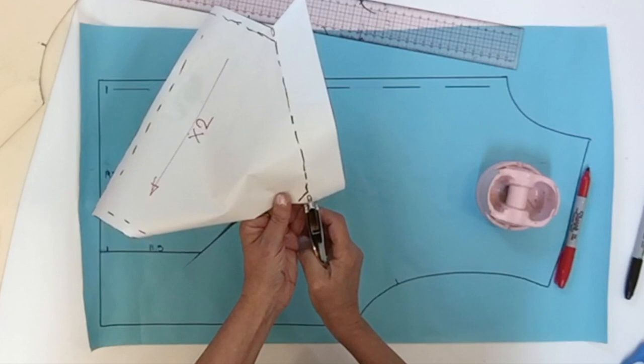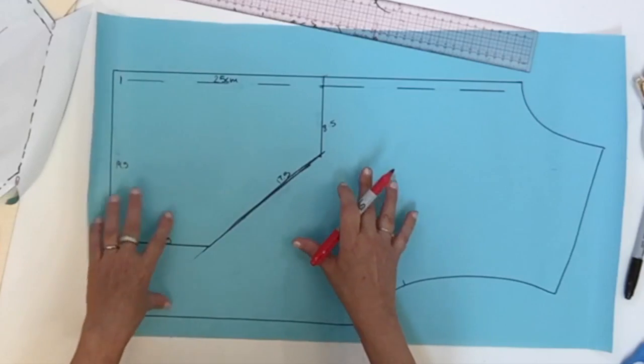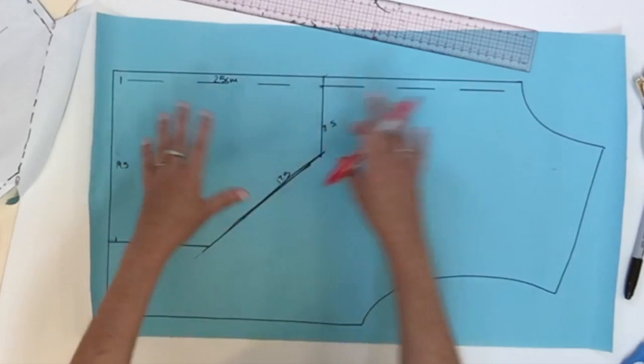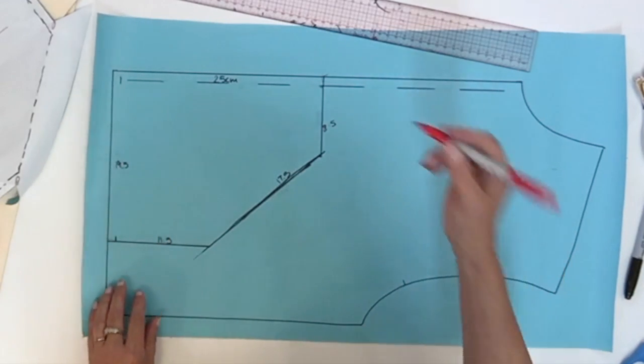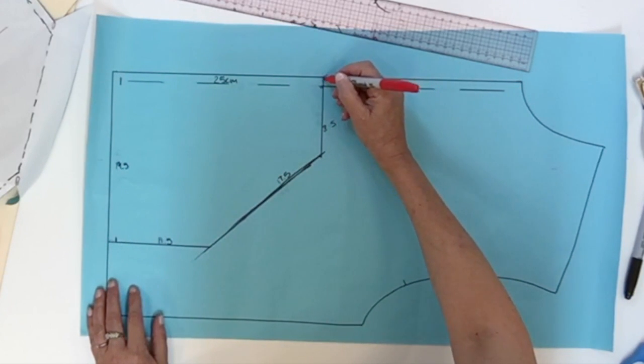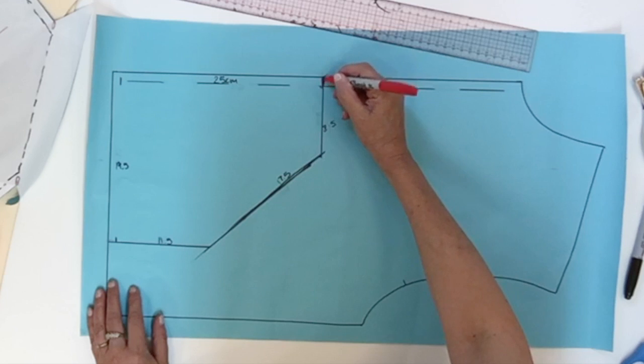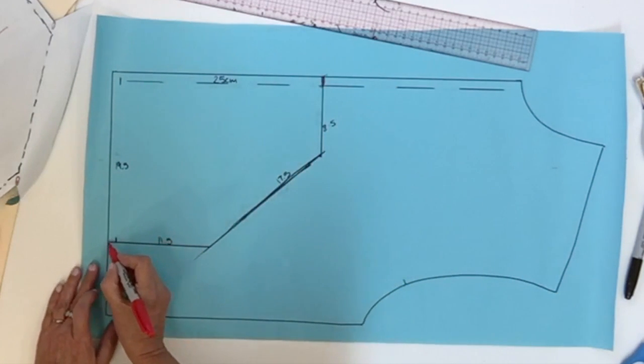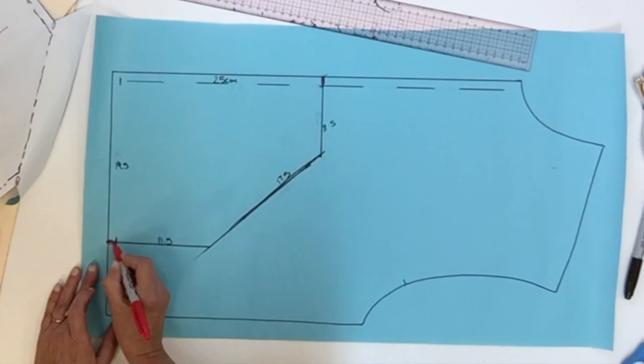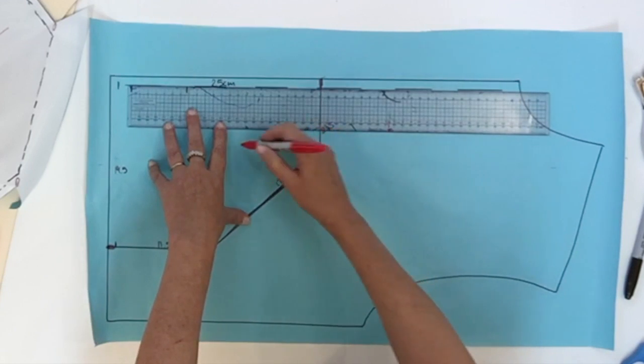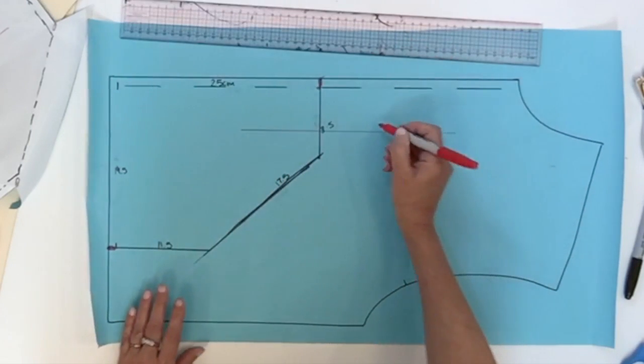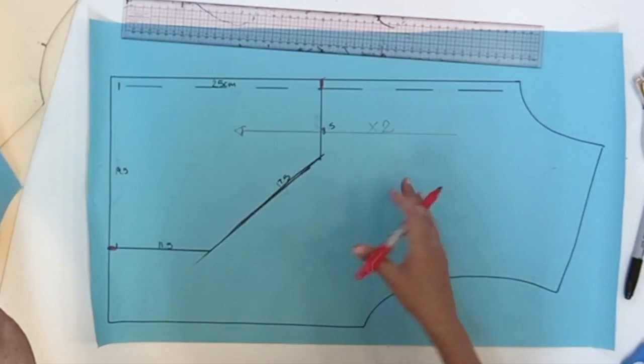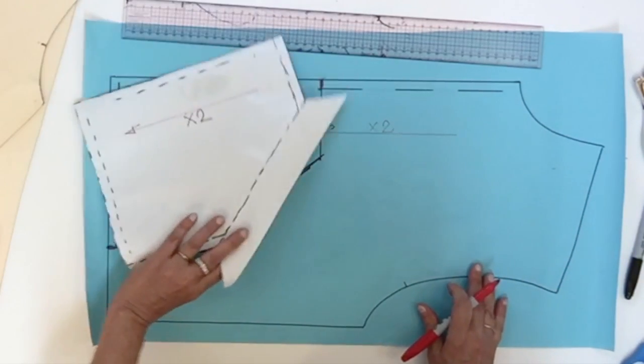Now for the bodice itself, it's going to be all the same except two new notches: one at the top of the pocket and one at the bottom side of the pocket. Of course, your front is also cut two times. You've finished your new bomber jacket with a kangaroo pocket.